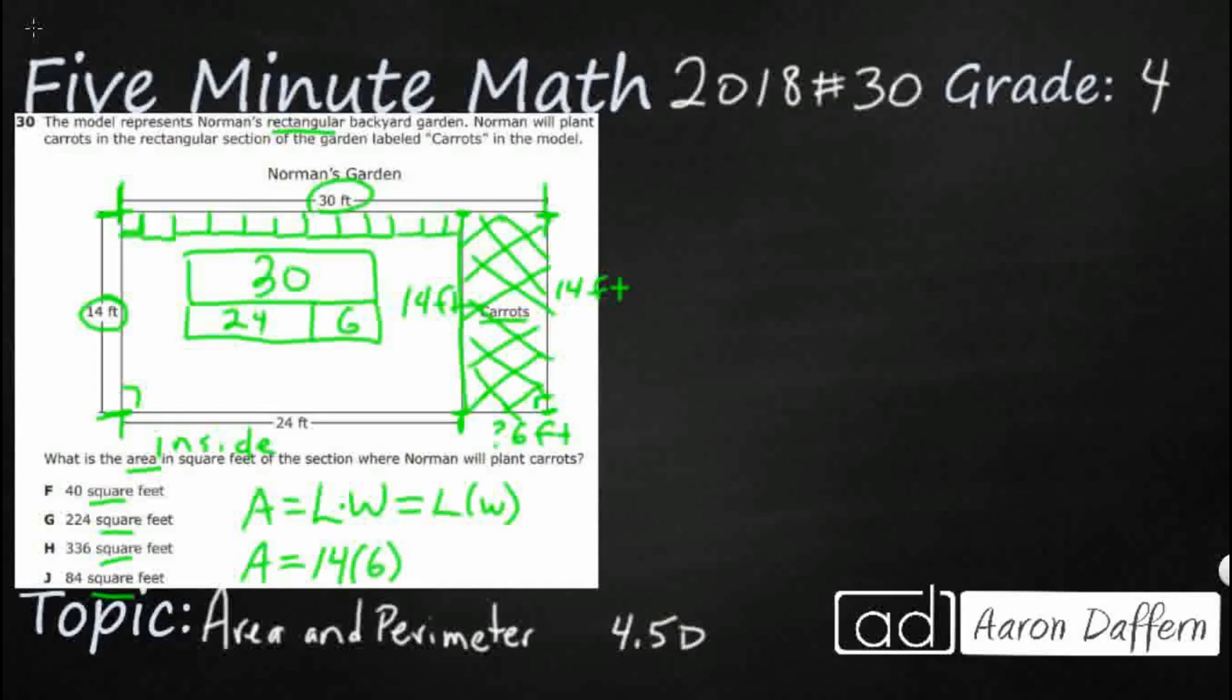Now we have our dimensions 14 times 6, they made us do a little bit of work. So let's just go ahead and multiply 14 times 6 and I'm going to multiply two different ways. I'm going to go ahead and do the standard algorithm first and also show you how to do partial products.